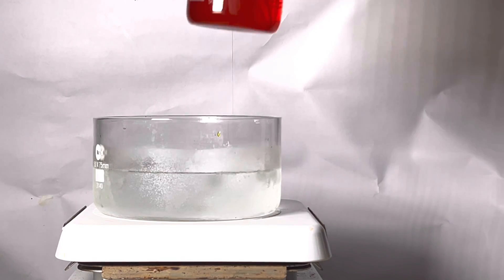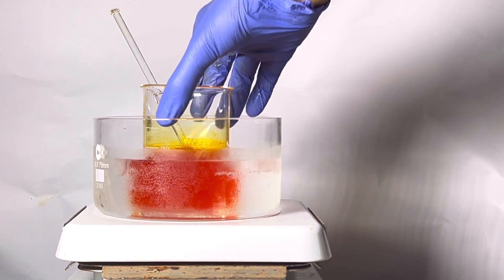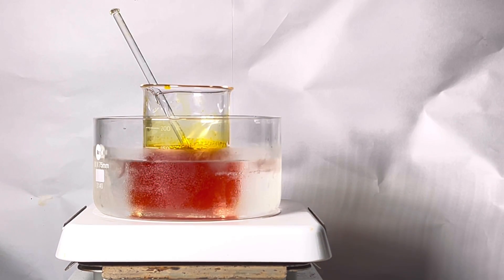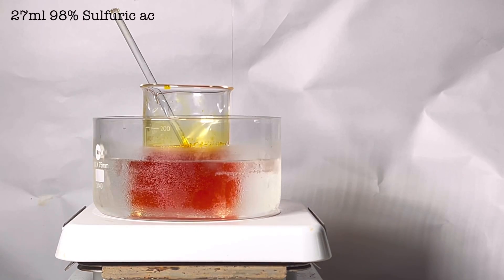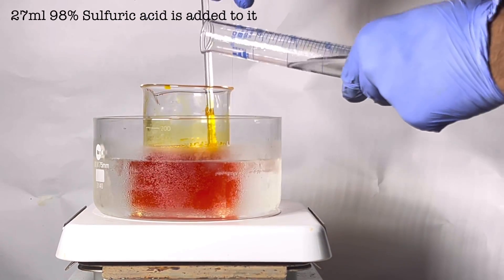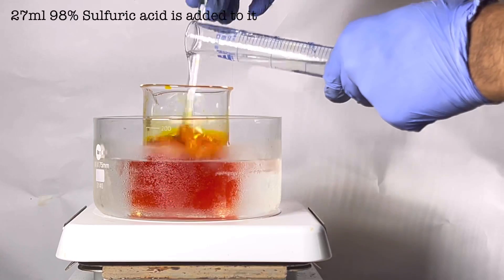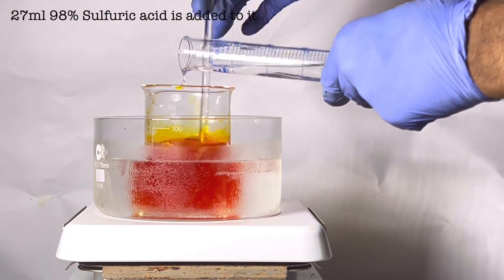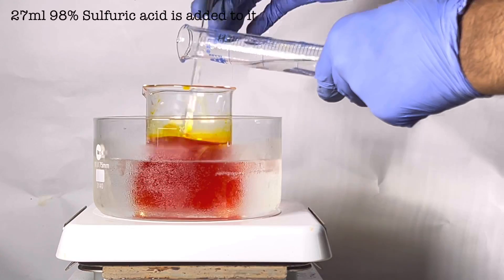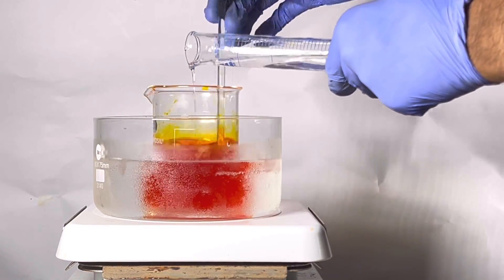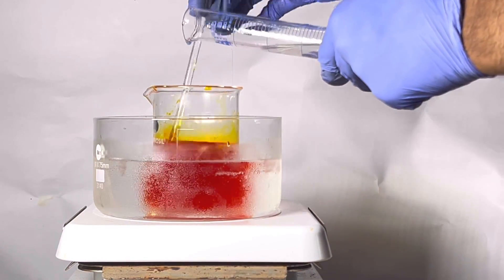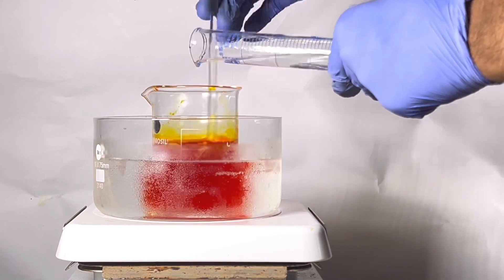Next, the sodium dichromate solution was immersed in an ice water bath to chill down the temperature to less than 15 degrees Celsius. 27 milliliters of concentrated 98% sulfuric acid is added to the chilled solution with stirring. You can notice how the color of the solution changes from orange to red. Here, the chromic acid is produced in situ.